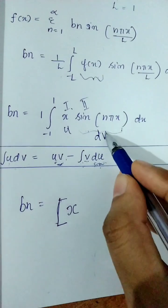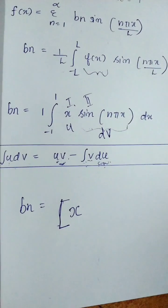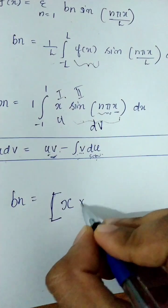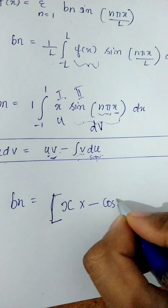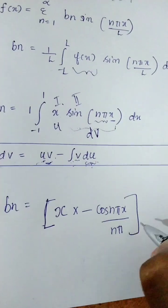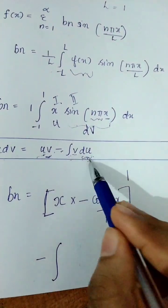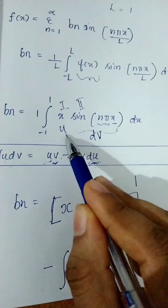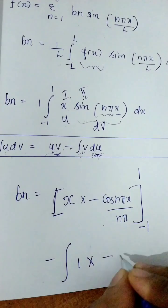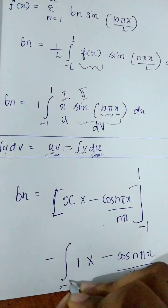Applying integration by parts: x into v, where v equals minus cos(nπx) by nπ, because the integral of sin(nπx) is minus cos(nπx) divided by nπ. So we have x times minus cos(nπx) divided by nπ, minus the integral of v·du, where du equals 1 dx, so we get minus cos(nπx) by nπ. The limit is from minus 1 to 1.